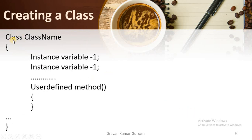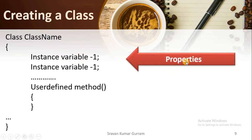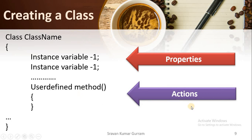Now, how do we create a class? This is the syntax to create a class in Java. First, we write the keyword 'class', followed by a space and the class name — you must give an appropriate class name. Then you create a block with curly braces, which marks the starting and ending point of the class. Within this class, you need to create variables and methods. We use instance variables to store the properties of an object, and we use methods to implement the actions of the objects.